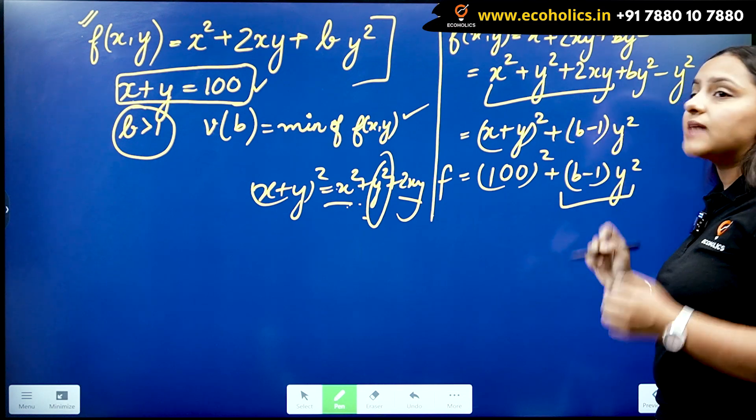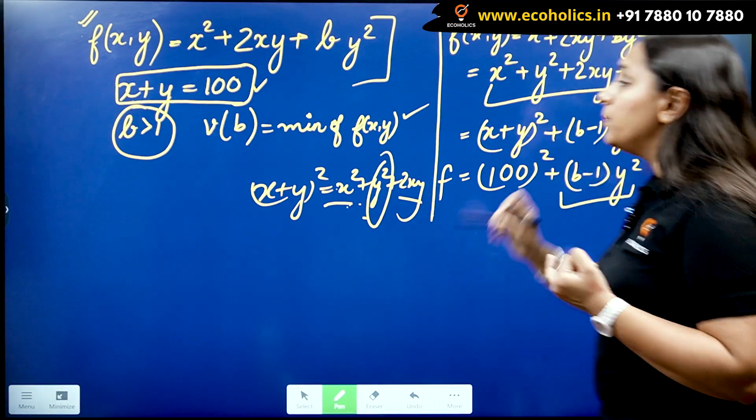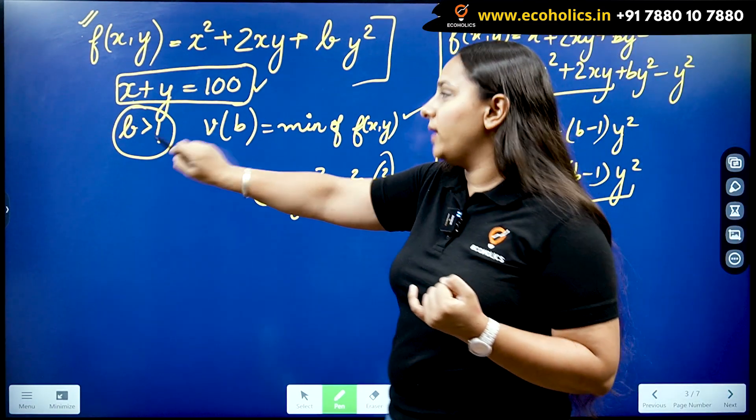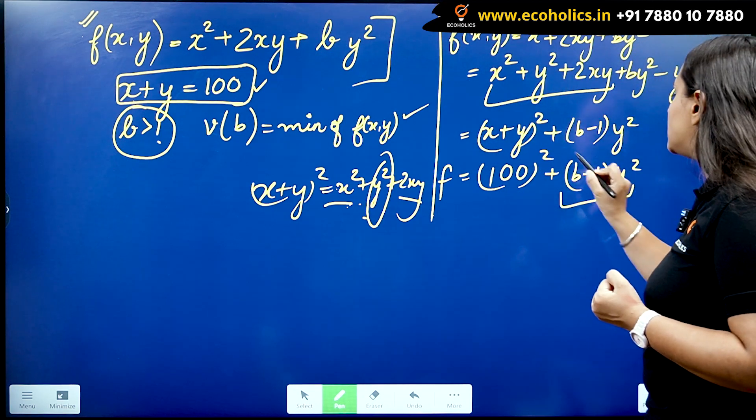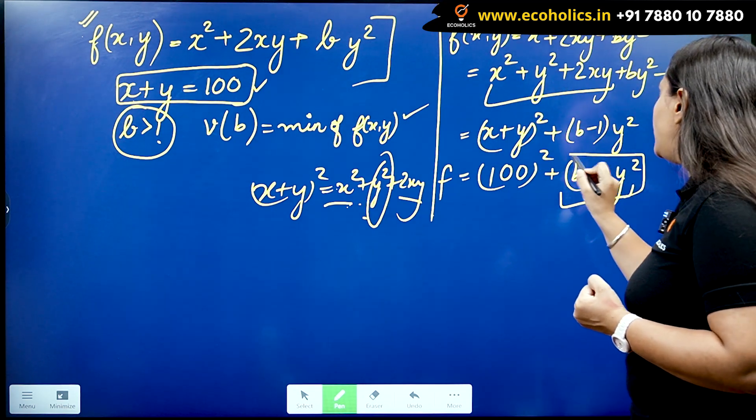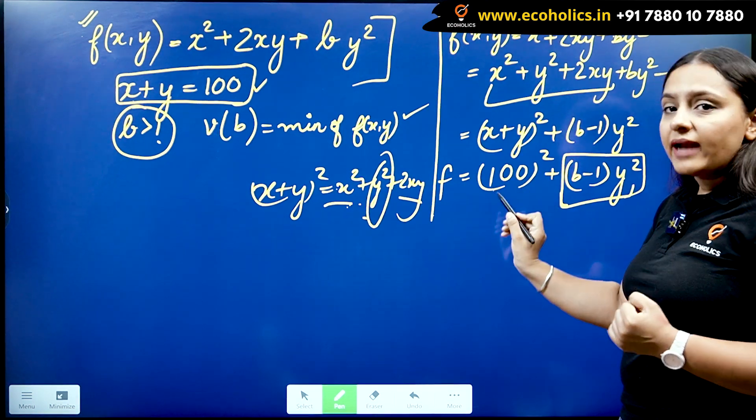So 100² plus some positive value is always going to give me a number greater than 100². So what I want to do is I want to minimize this thing.